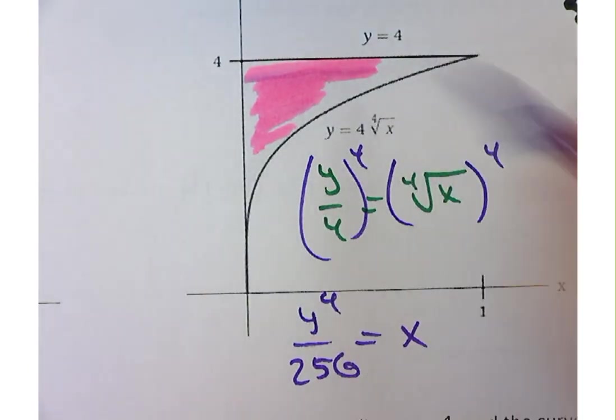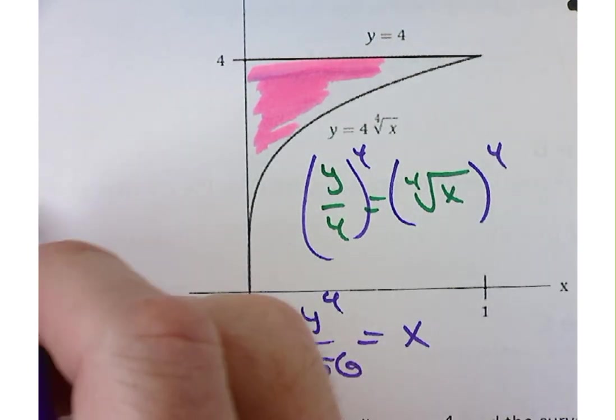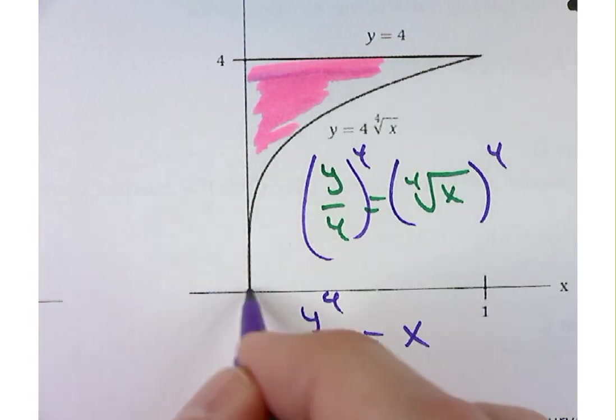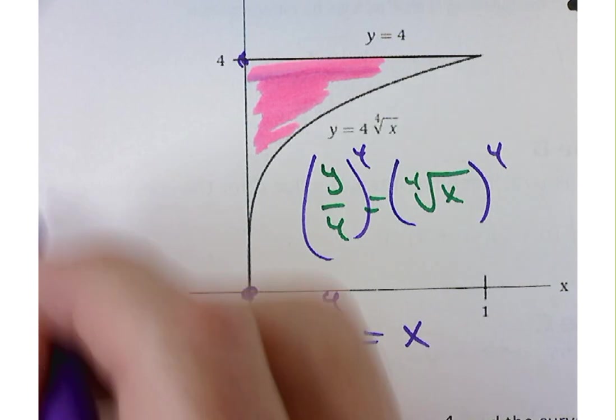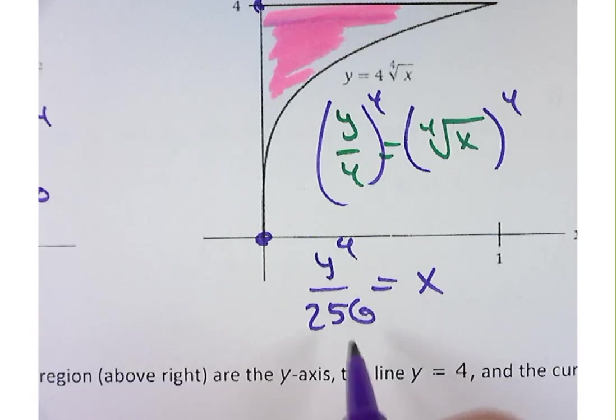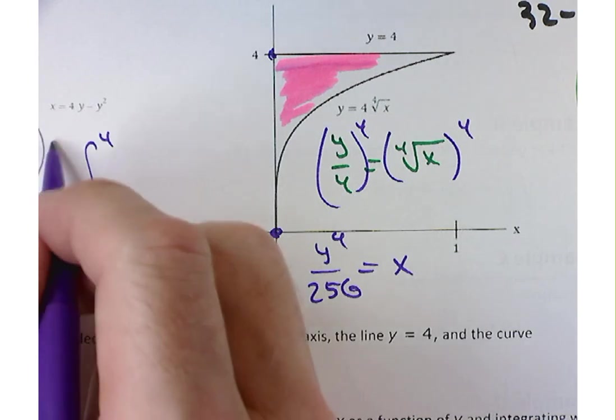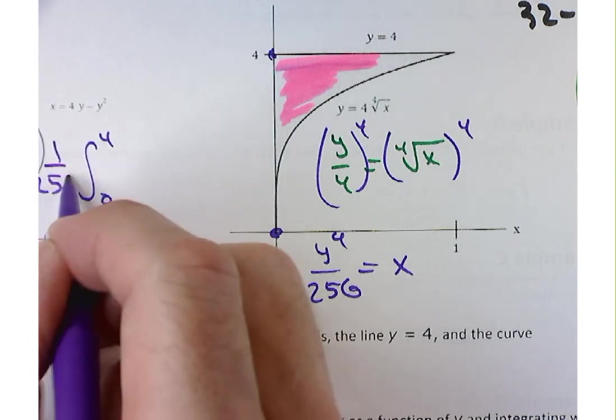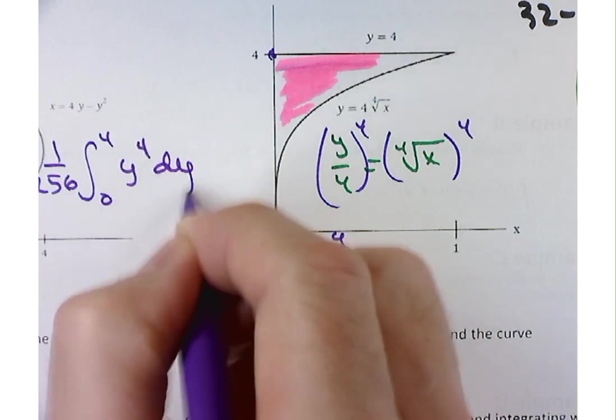To actually find that area, that area is going to be the integral from here to here. We're integrating with respect to y, so your limits should be along the y-axis. From 0 to 4, the constant of 256, I can write that out in front, 1 over 256, leaving behind y to the fourth dy.